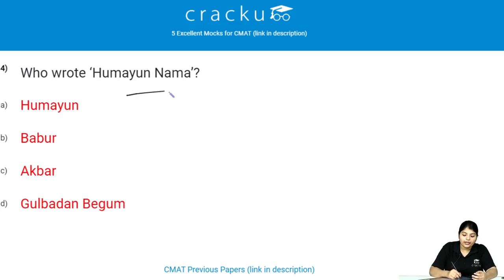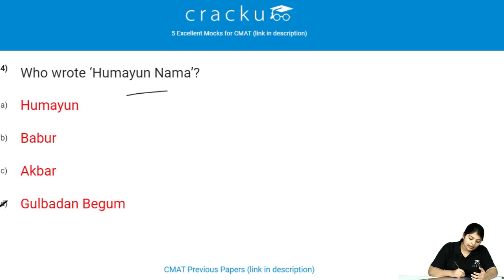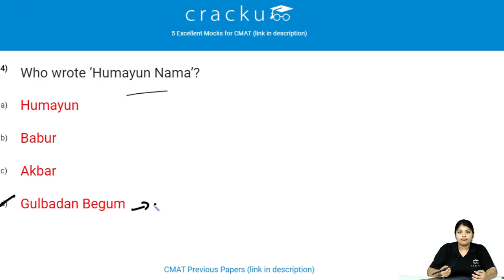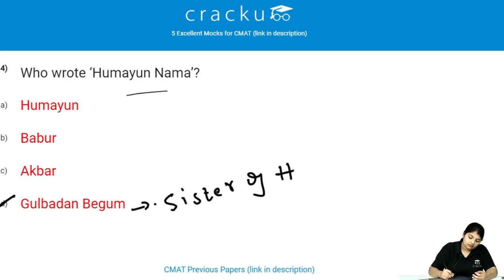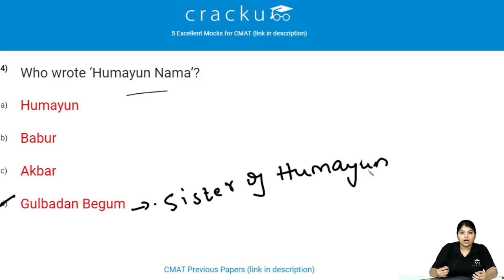Who wrote Humayun Nama? Humayun Nama was written by Gulbadan Begum. She is the sister of Humayun and the daughter of Babur.